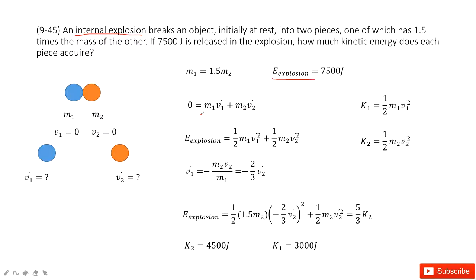Very easy. The first equation comes from the linear momentum being conserved. Initial momentum is zero because the object is stationary and it breaks into two parts.